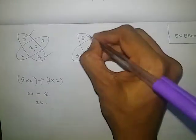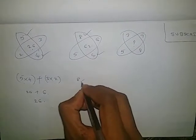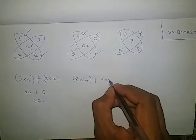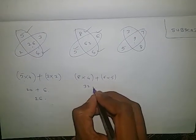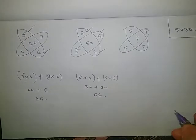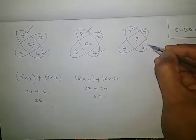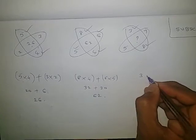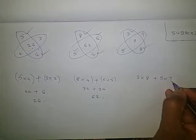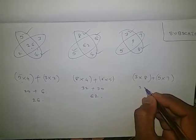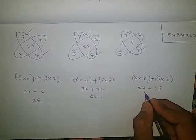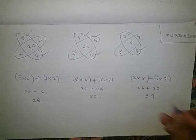The same logic: 8 into 4 plus 6 into 5. 8 fours are 32, plus 6 fives are 30. 32 plus 30 is 62. Same logic here also: 3 into 8 plus 5 into 7. 3 eights are 24, plus 5 sevens are 35. 24 plus 35 is 59.